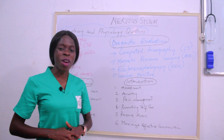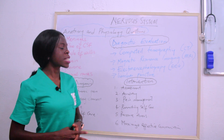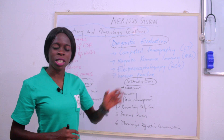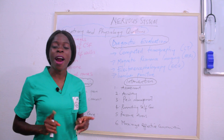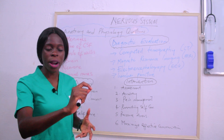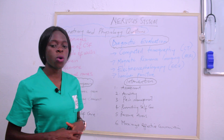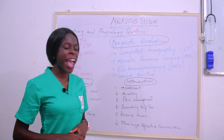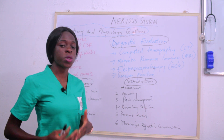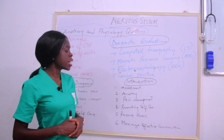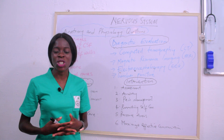The first diagnostic evaluation on the board is computed tomography, popularly known as a CT scan. In your exam, write the full term: computed tomography. The next is magnetic resonance imaging, commonly known as MRI — again, write the full term in your exam. The third is electroencephalography, commonly abbreviated as EEG. These are key diagnostic evaluations for neurological conditions.